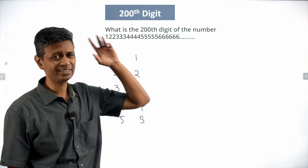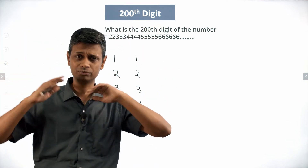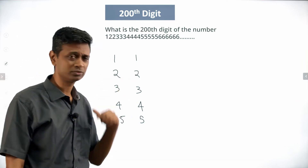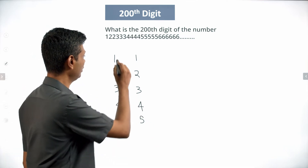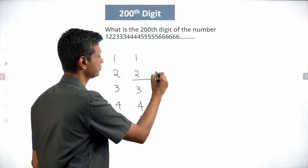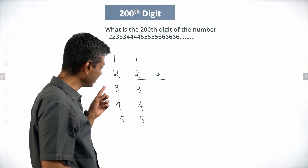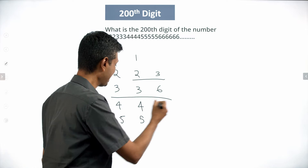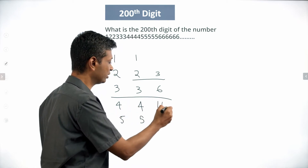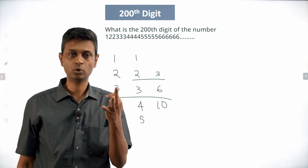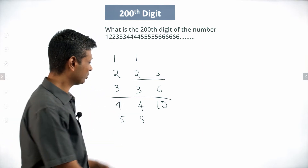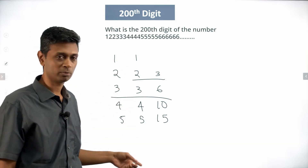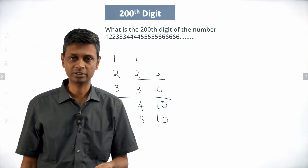I am not going to worry about the 200th digit so far into the future — such a long thing. I am going to think about: at the end of the 2s, how many digits have we gone by? 1 plus 2 is 3. At the end of the 3s, we have gone 6 digits. At the end of the 4s, we have gone 10. At the end of the 5s, we have got 15. It is nothing but 1 plus 2 plus 3 plus 4 plus 5, plus 6, and so on.